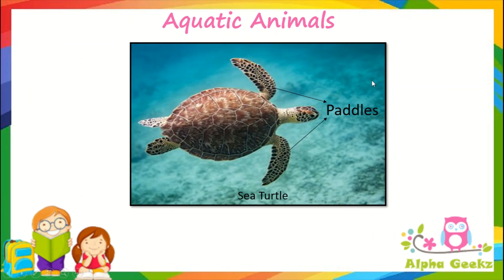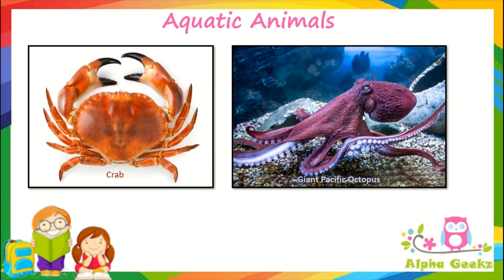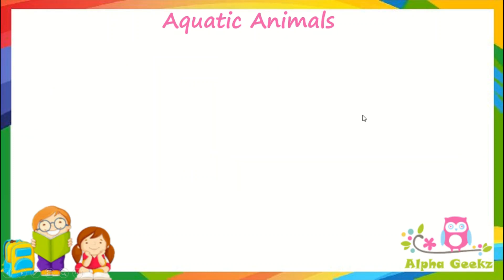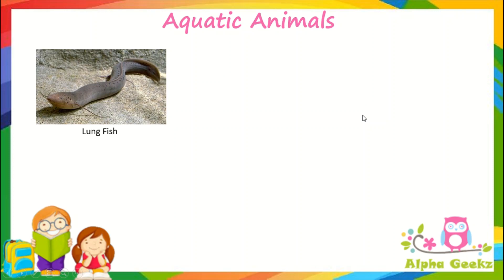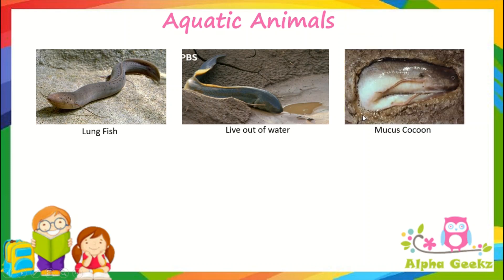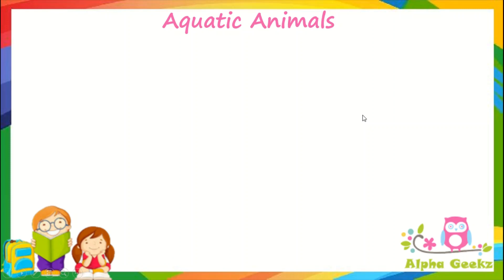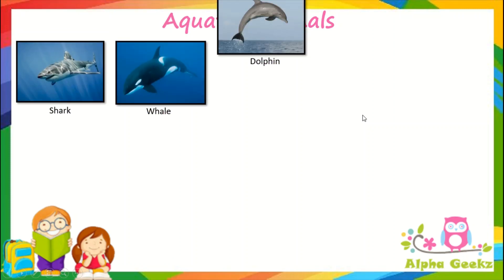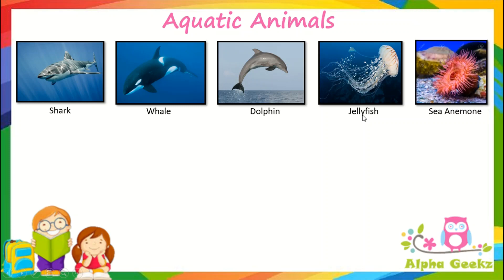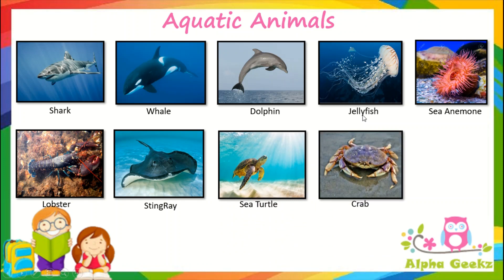Turtles are aquatic reptiles that have paddle-like limbs to move easily in water. Crabs and octopuses are some examples of invertebrates living in water. The lungfish can live out of water for several years — it secretes a mucus cocoon and burrows itself under the soil. It has both lungs and gills. Some examples of aquatic animals include shark, whale, dolphin, jellyfish, lobster, stingray, sea turtle, crab, and starfish.